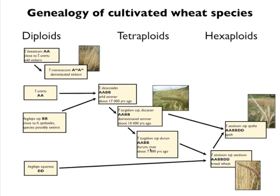To form bread wheat, which is hexaploid with six sets of chromosomes and three genomes, there's some controversy about what actually happened. The additional genome came from Aegilops tauschii, which is in the same general grass family that also contributed the B genome. This species probably hybridized with a free-threshing Durham wheat to form bread wheat. Current evidence suggests bread wheat formed first, and then crossing with a domesticated emmer formed spelt, which is hulled.